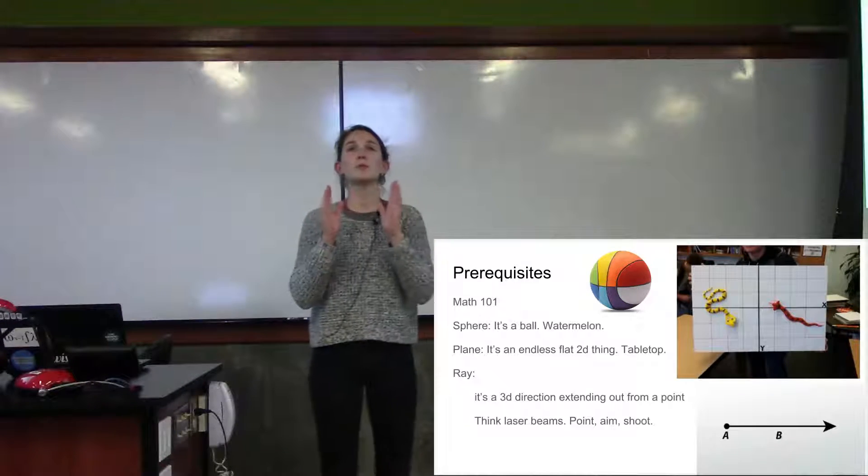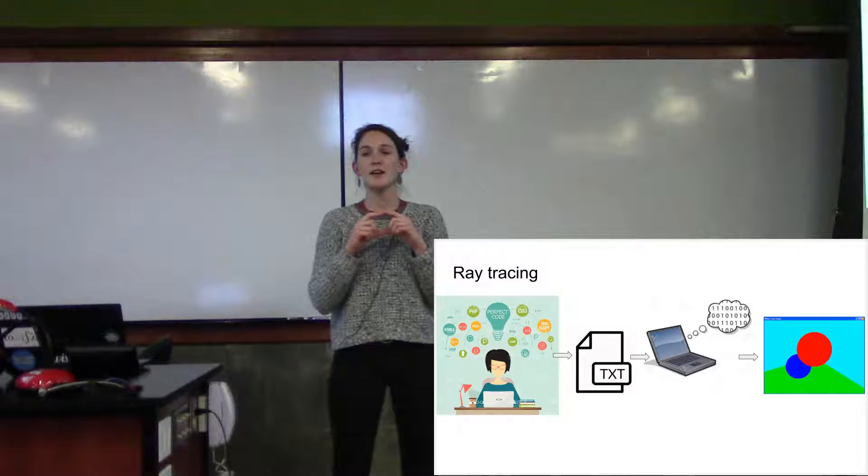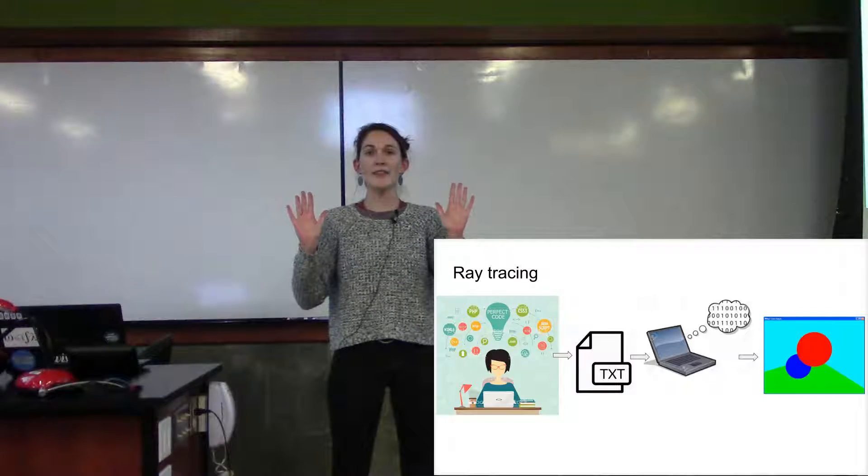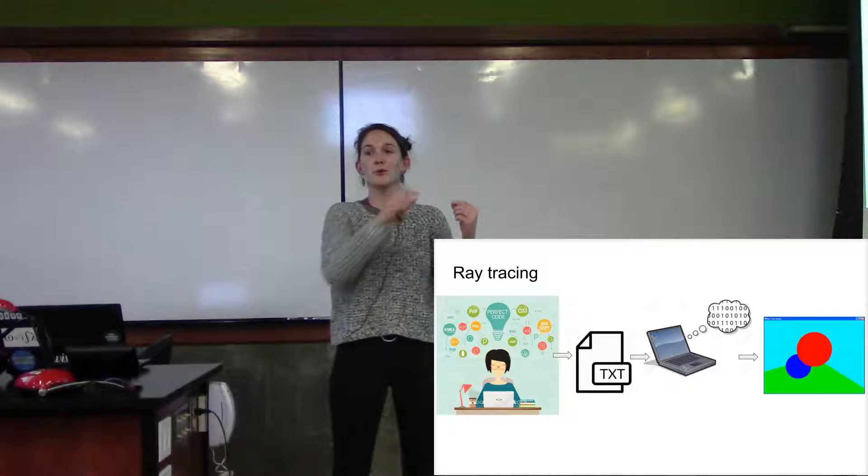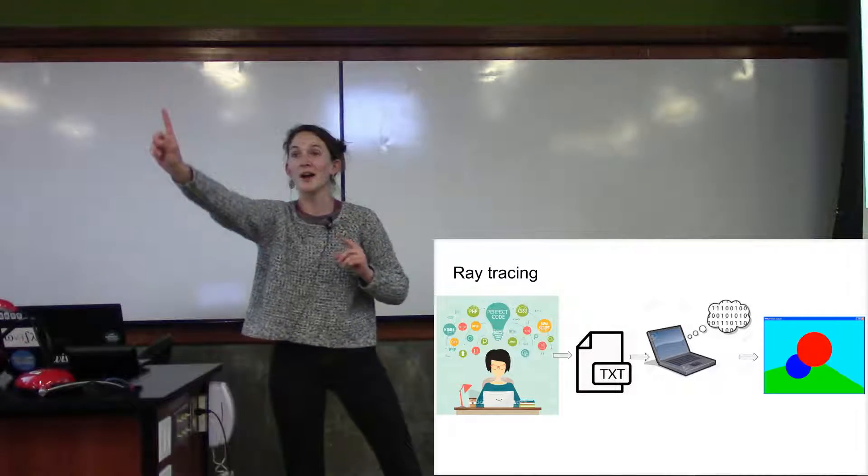So what we're going to do is we're going to write a program that takes in a text file, and it does some thinking, and it produces a picture. And then we're going to do that a lot of times. In the end, we string all the pictures together to make the movie. We don't care about the movie part, we're just making one picture.